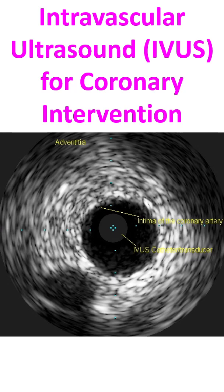While manual pullback allows concentration on specific lesions, it may miss some lesions in between if the pullback is not steady. The catheter has to be disengaged while evaluating coronary ostial lesions. Heparin and intracoronary nitroglycerin are given before the guide wire is inserted after coronary cannulation. The IVUS catheter is then introduced over the guide wire, and images are continuously recorded by the system for later review and analysis.